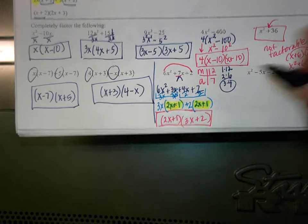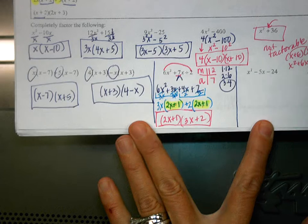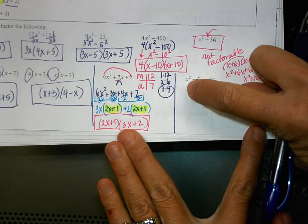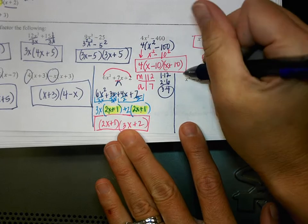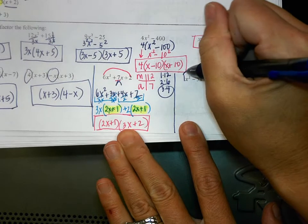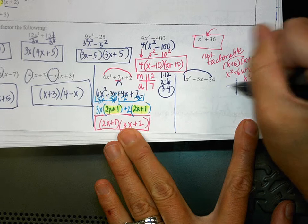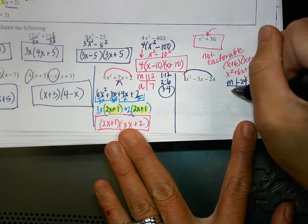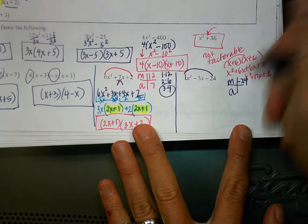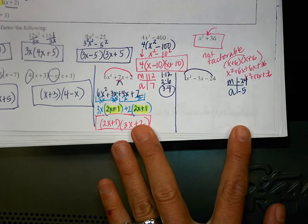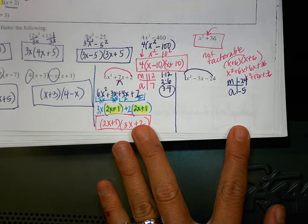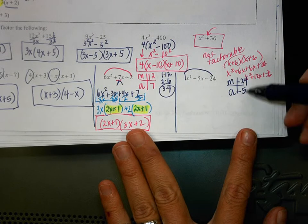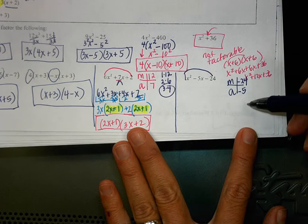So we're going to try another one — same type of problem. Except on this one, if there isn't a number in front, what number is there? 1. So this is saying 1 times negative 24, which is negative 24. And my adding number is negative 5. So let's say I don't know off the top of my head what multiplies to be negative 24 and adds to be 5, so I start listing all the numbers that multiply to be 24, starting with 1.